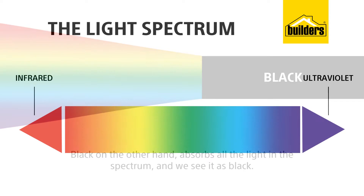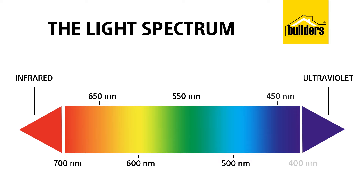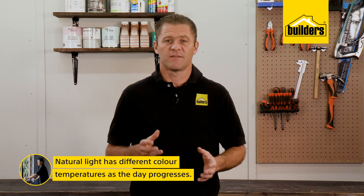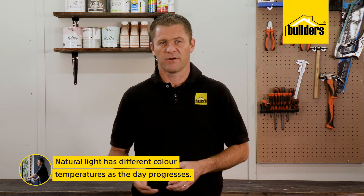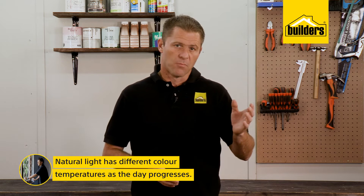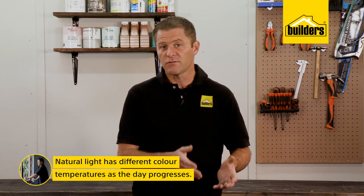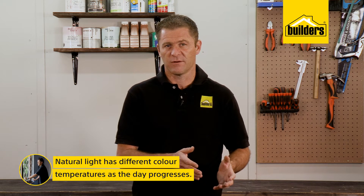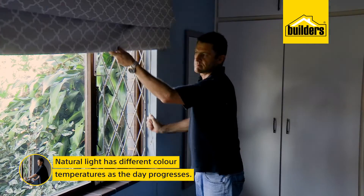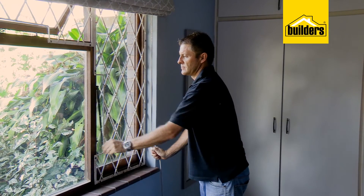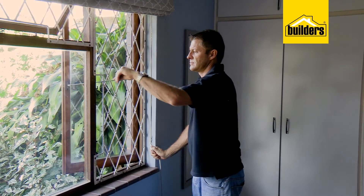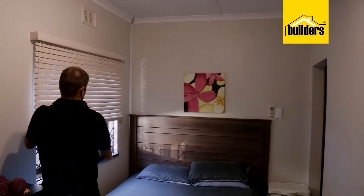In between black and white are all the colors we see, and each individual color will absorb and reflect light waves differently, making them appear different to our eyes. Natural light has different color temperatures as the day progresses. Morning light has a Kelvin temperature of three to four thousand degrees with a slight pink tinge, which turns blue as the day goes on and the Kelvin temperature increases to about six and a half thousand degrees at midday.